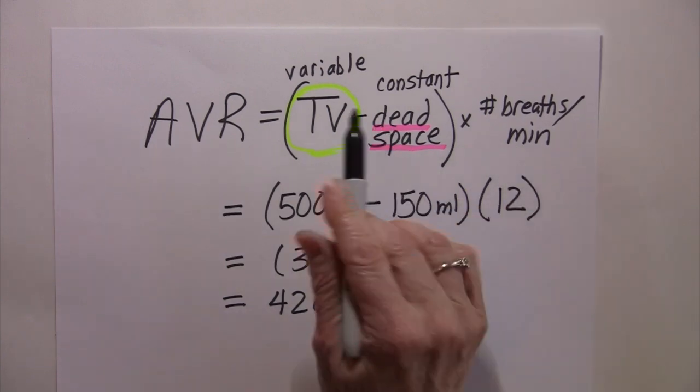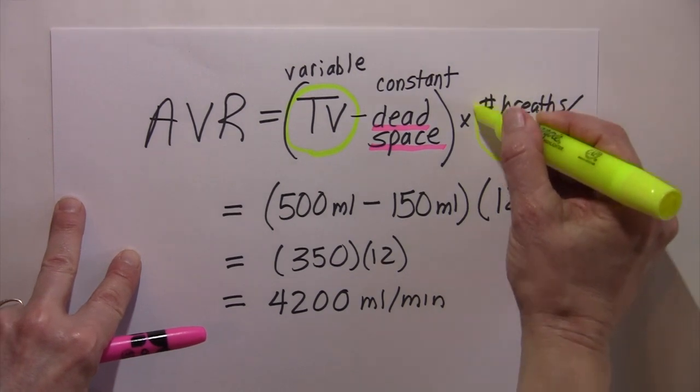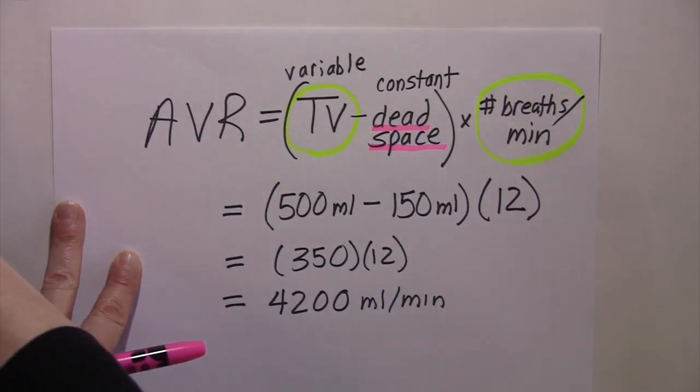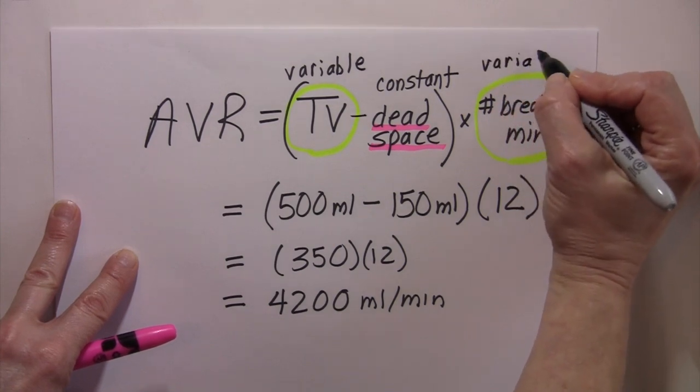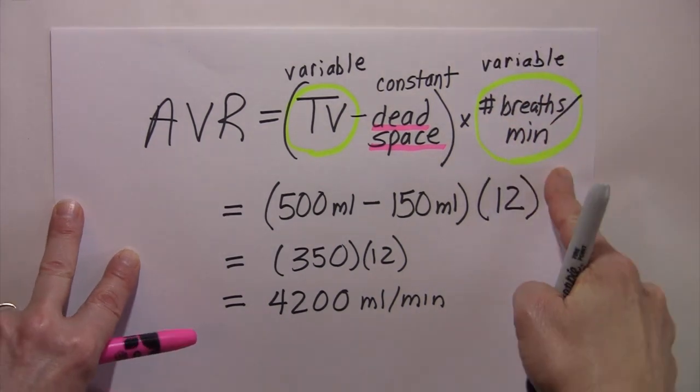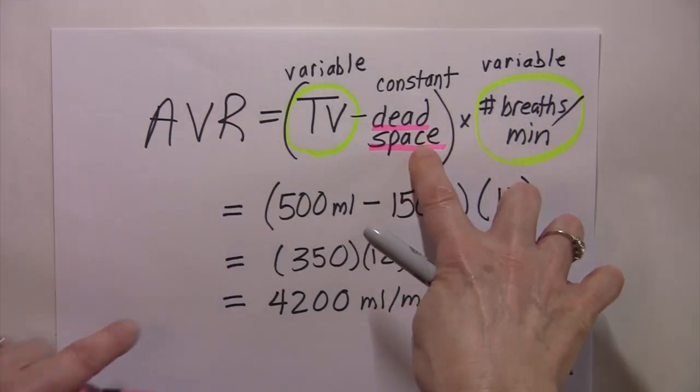Number of breaths per minute. Is that a variable or a constant? And we know that that is a variable because we could be breathing at different rates. Right? If we're taking a nap, maybe we're breathing more slow than if we're exercising, the number of breaths per minute is going to go up. And so this equation is made up of two variables and a constant.